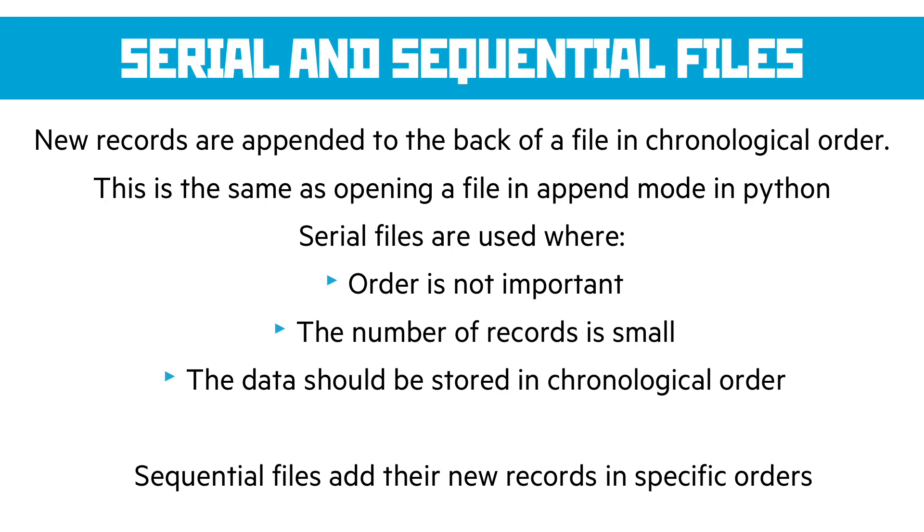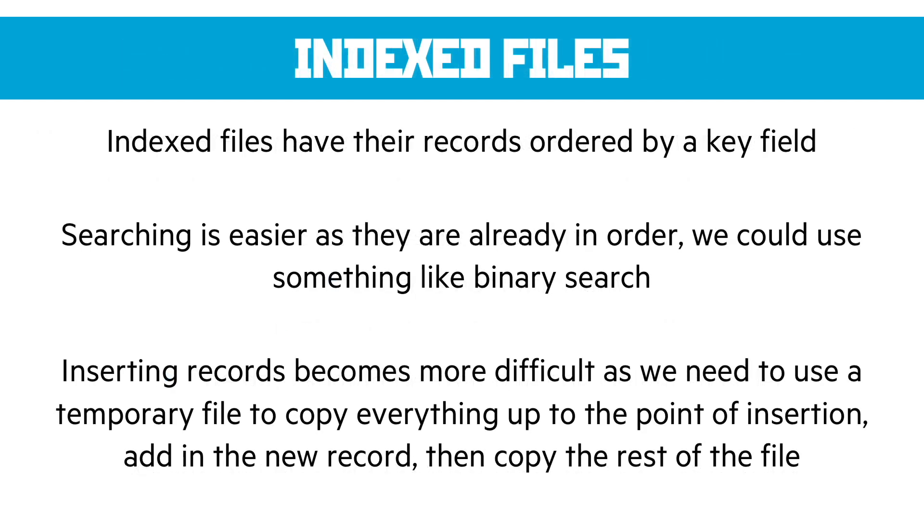One of these types of files is an indexed file and they have their records ordered by a key field that we decide. And this makes searching much easier as they are already in order. So we could use something like binary search, a divide and conquer algorithm to make that searching process much, much shorter.